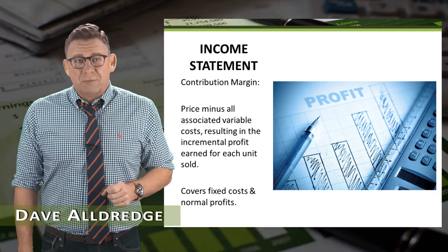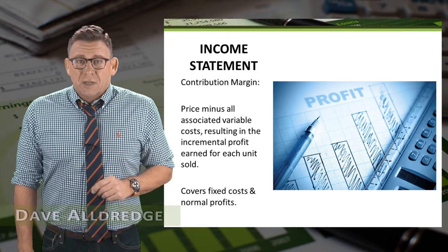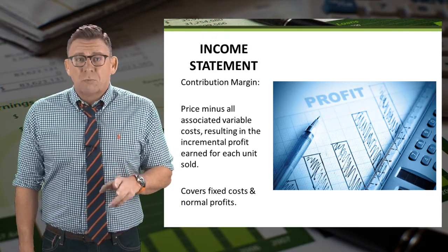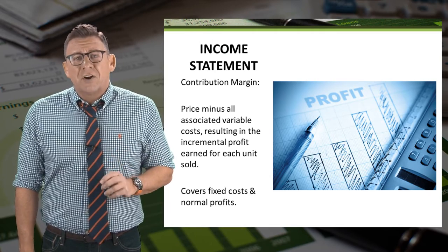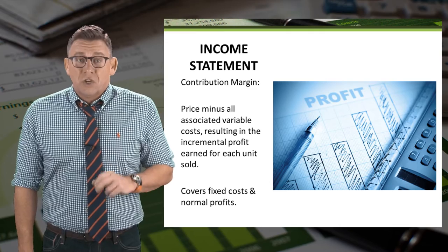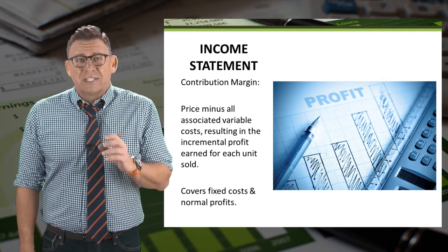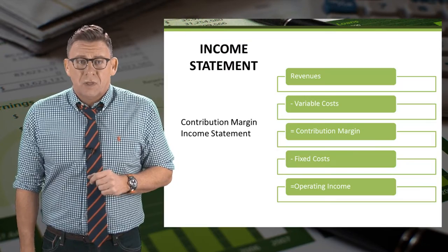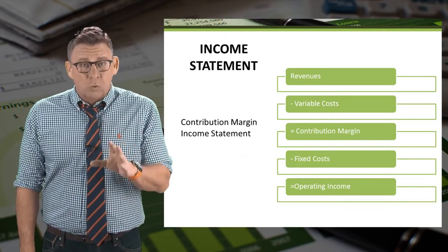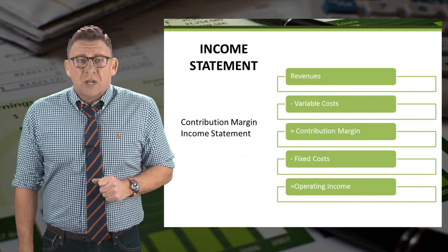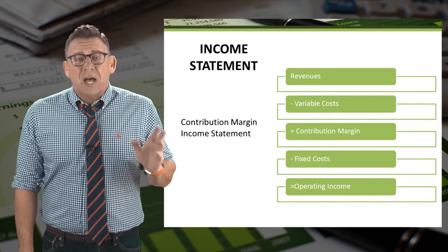The contribution margin income statement is used for many internal decisions. This is because costs are grouped by behavior rather than function, and that provides better internal information. The contribution margin itself is revenues minus variable costs. The full income statement is revenues minus variable costs equals contribution margin, and from that we subtract fixed costs to get operating income.